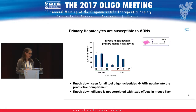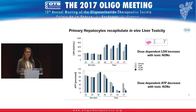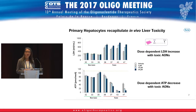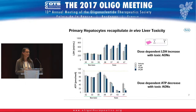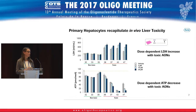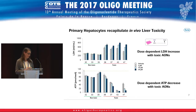We did a next experiment looking for toxicity in freshly isolated mouse hepatocytes — initially for LDH levels and then for ATP levels, both cytotoxicity readouts. We don't have any effect on LDH secretion or ATP reduction with the safe molecules, whereas the in vivo toxic oligonucleotides show a dose-dependent increase in LDH in the supernatant of the cell cultures and a dose-dependent decrease in intracellular ATP levels.